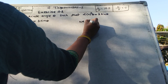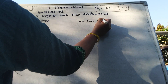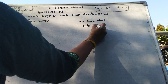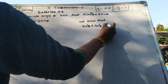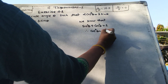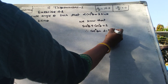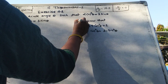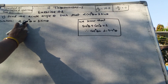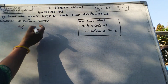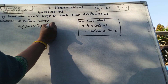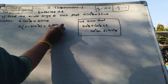We know the fundamental identity: sin squared theta plus cos squared theta equals 1. Therefore, cos squared theta equals 1 minus sin squared theta. Substituting into the equation: 2 times (1 minus sin squared theta) equals 3 sin theta.